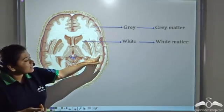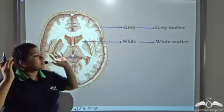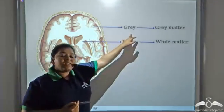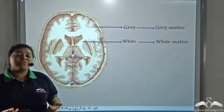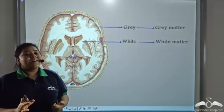This is the grey matter which forms the outer portion. It is grey in colour because it consists of the cell bodies of the neurons.